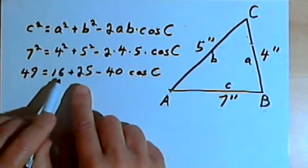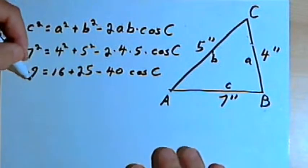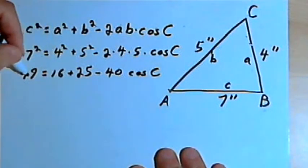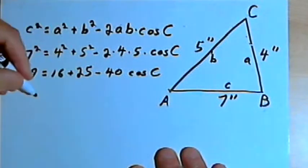And let's subtract the 16 and the 25 from 49. When I take 49 and subtract 16, I get 33. And then when I take that 33 and subtract 25, I get 8.